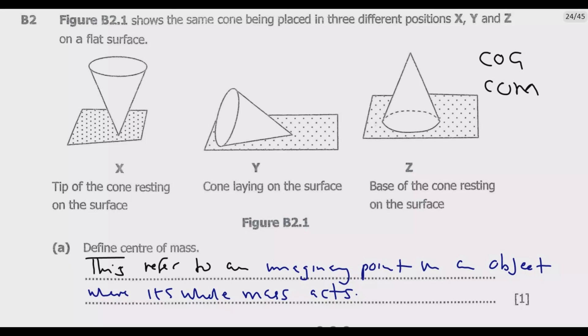The definition of center of gravity, instead of mass, refers to an imaginary point in an object where its whole weight acts. That's how you define the center of gravity. When I talk about center of gravity, you need to define it in terms of weight, whereas the center of mass is based on mass. That's the difference.